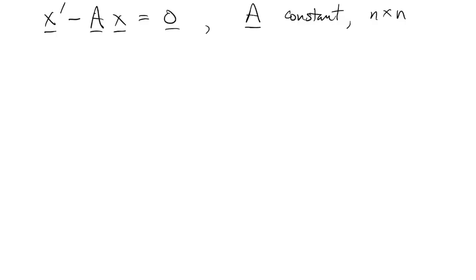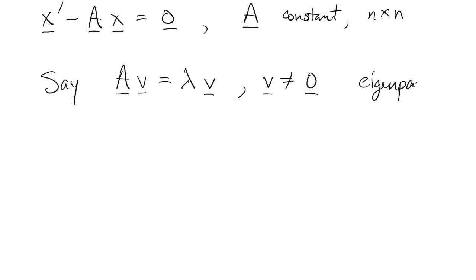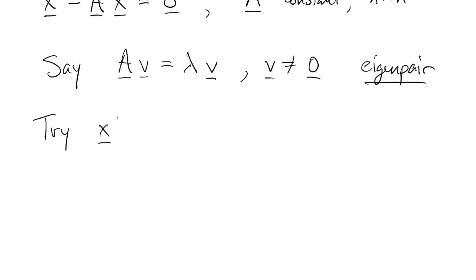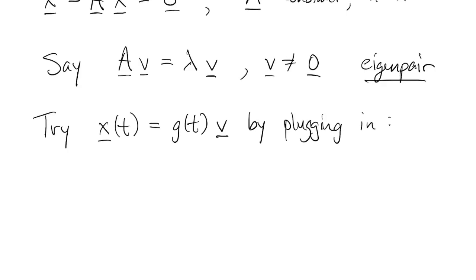So now we have our constant coefficient system. And we're going to look at an eigenvalue, eigenvector pair. And then we end up just kind of guessing the right way to find a solution. We're going to have an unknown function g of t times one of these eigenvectors. And we'll just plug that into both sides of x prime equals ax. So x prime is just g prime times v because v is constant.